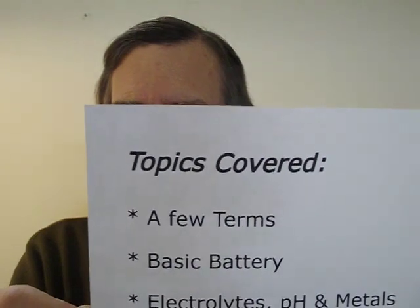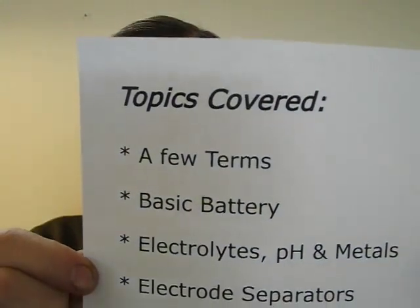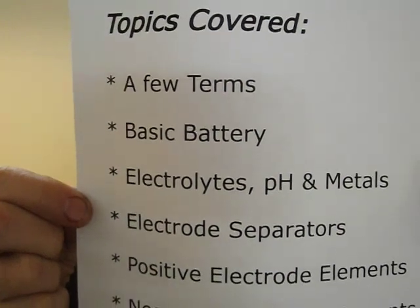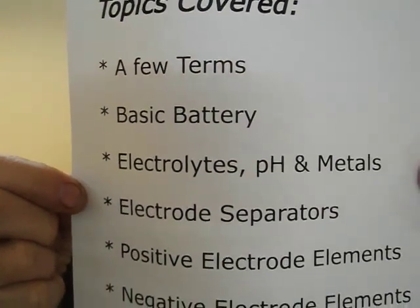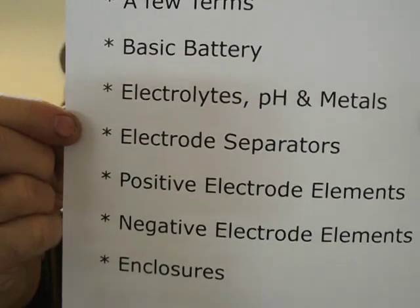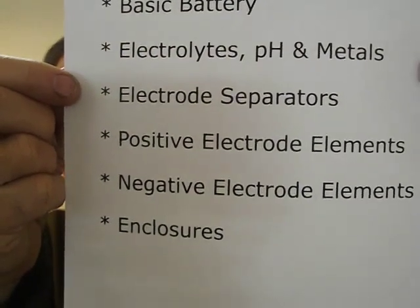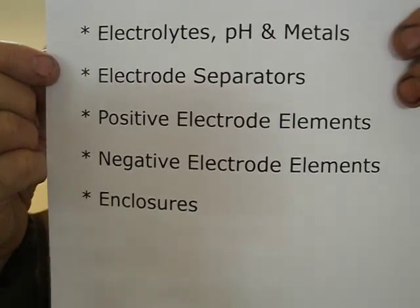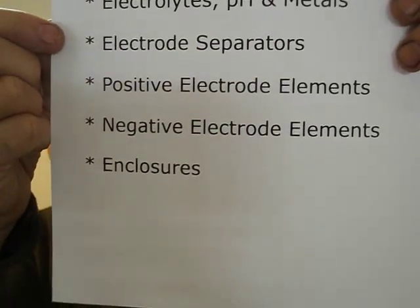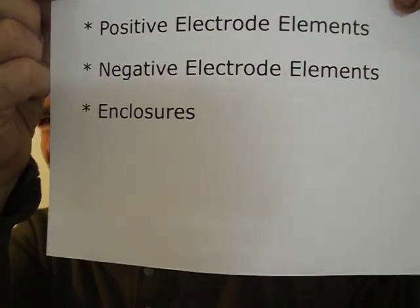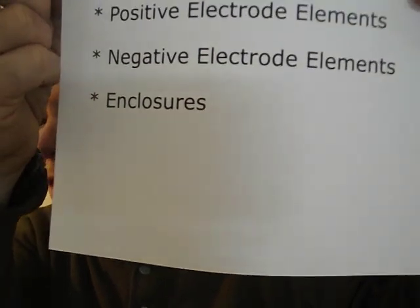The topics we're going to cover include what's on the paper here: a few terms for battery making — battery, basic battery, electrolyte, and pH — and metals, and separators, positive electrode elements, negative electrode elements, and enclosures.